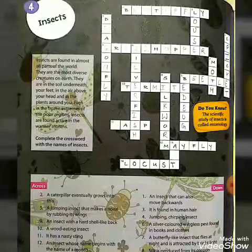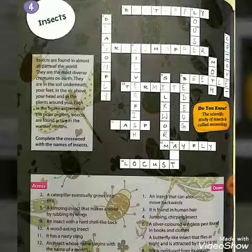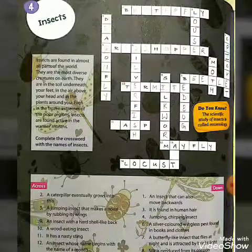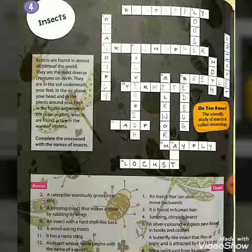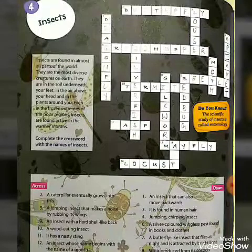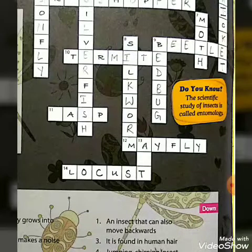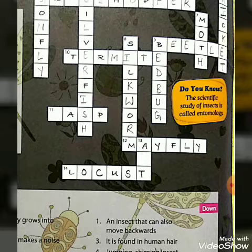Now seventh one. A butterfly-like insect that flies at night and is attracted by bright light. Your answer is moth — M-O-T-H. Moth. Moths make a silky cocoon.